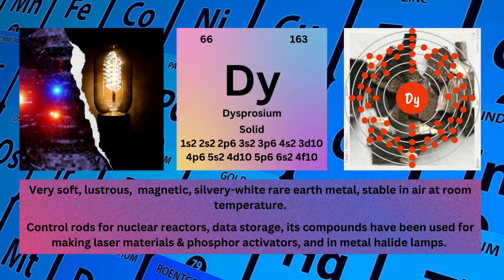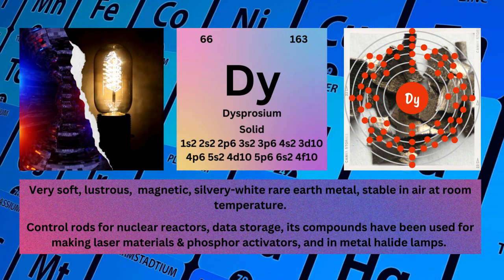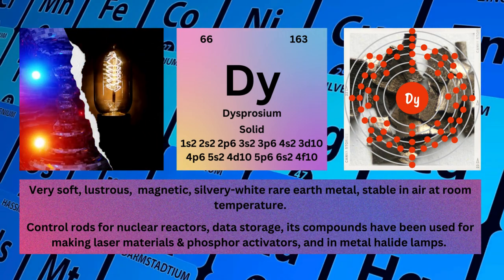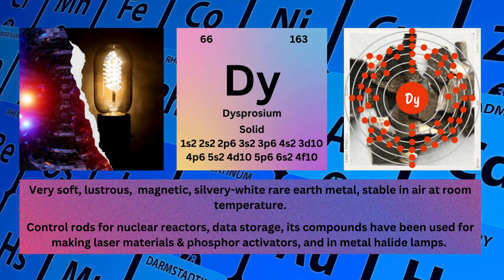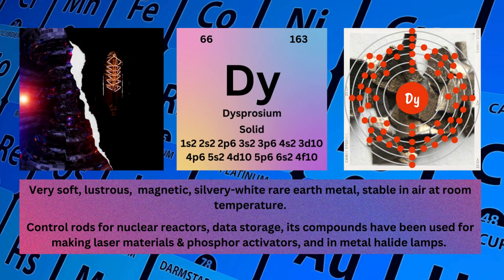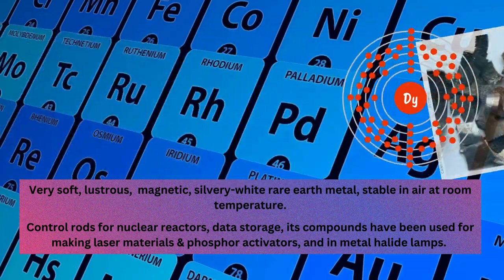Dysprosium is used in control rods for nuclear reactors, data storage; its compounds are used for making laser materials and phosphor activators, and in metal halide lamps.